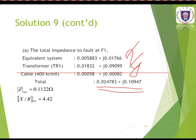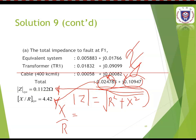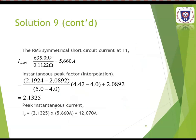Calculate the RMS symmetrical short circuit current at F2: IRMS = V-phase / Z_total = (415/root-3) / 0.05743 = 239.6 / 0.05743 = 4172 amperes. Then to get the peak instantaneous current, use the interpolation method with the asymmetrical current table to find the instantaneous peak factor, times IRMS. Also identify the half-cycle factor for the RMS asymmetrical current.